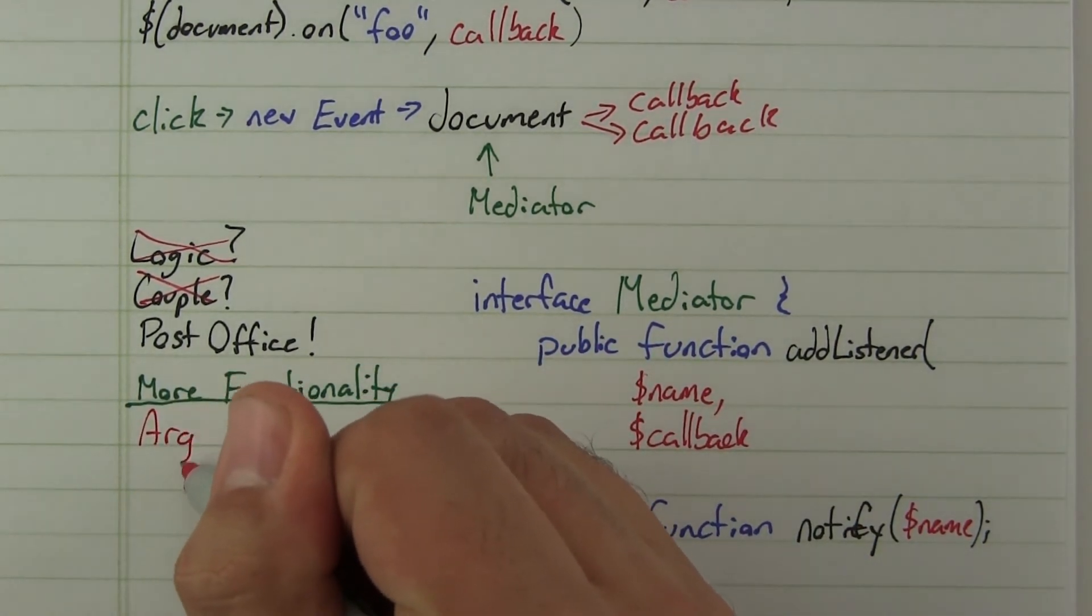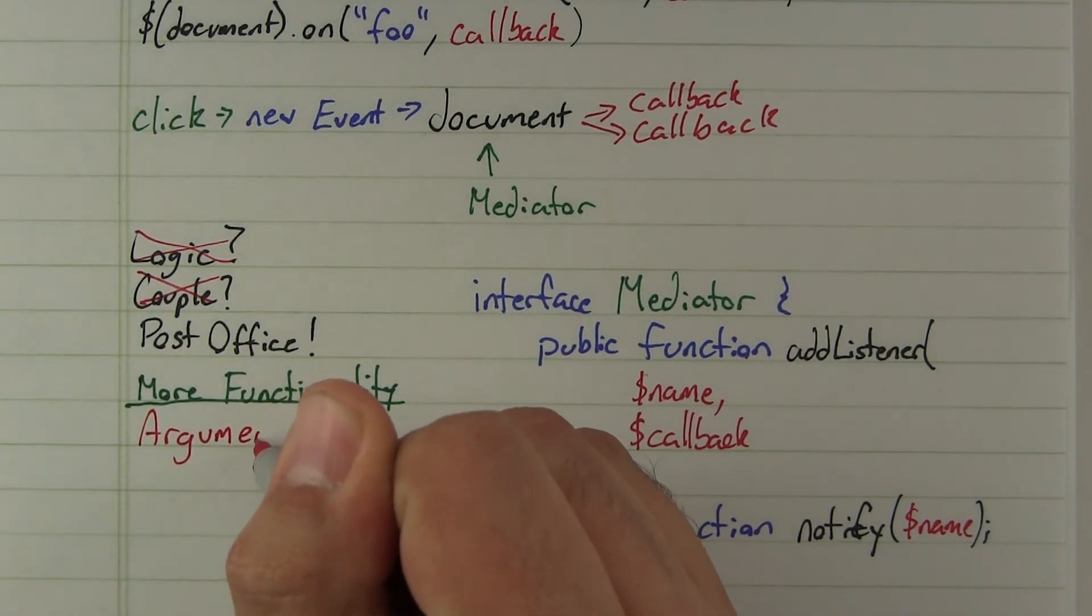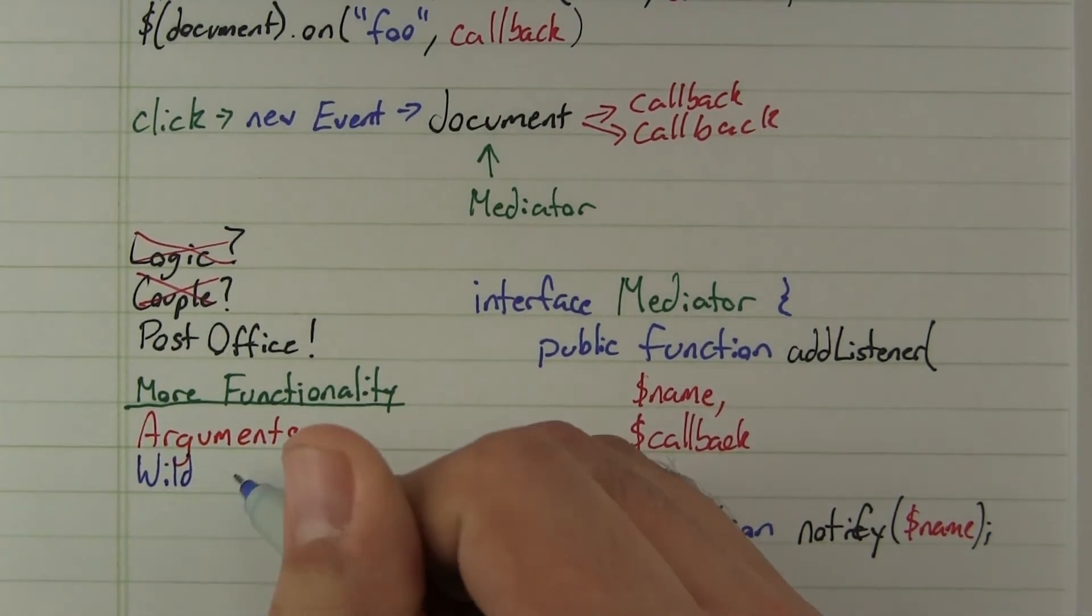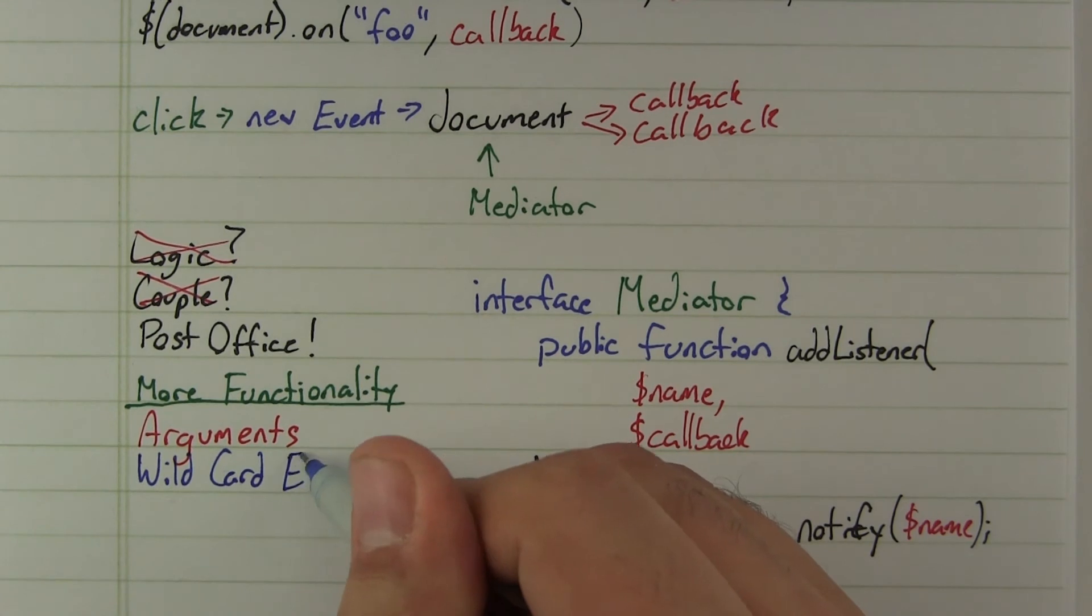For example, if we want to pass data to the callbacks, we could add an arguments array to notify. If we want more flexibility in listeners, we could add support for wildcard event names.